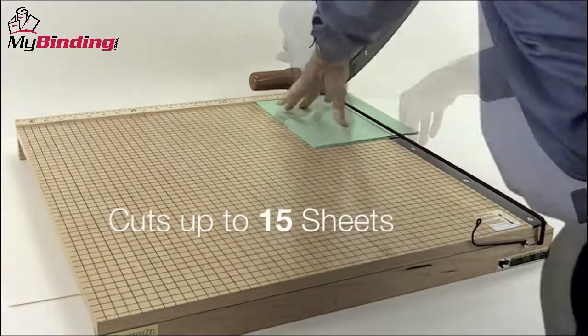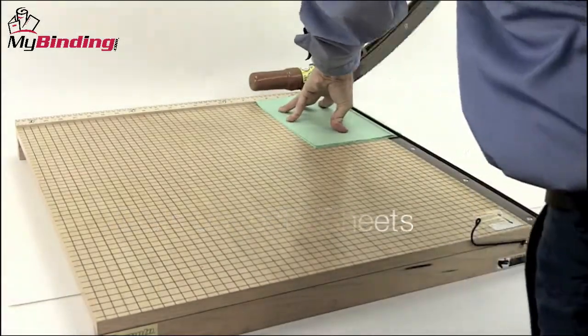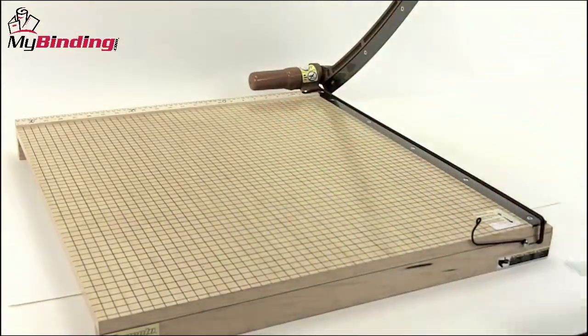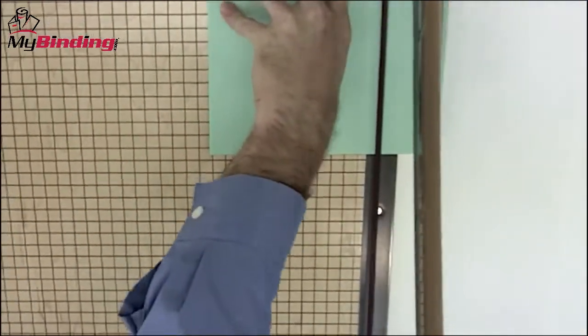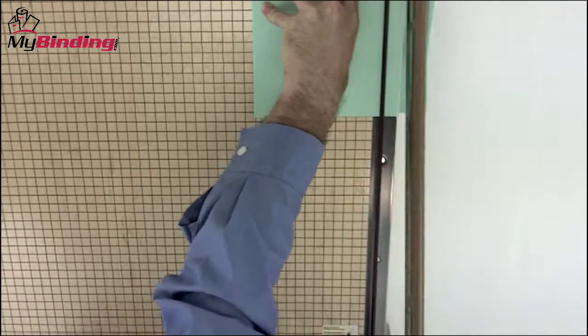Cutting capacity is crucial in a paper trimmer. This Ingento blade can slice up to 15 sheets of 20-pound paper per lift with no problem. We actually tried 20, and that was also not a problem, though the cut wasn't quite as precise.